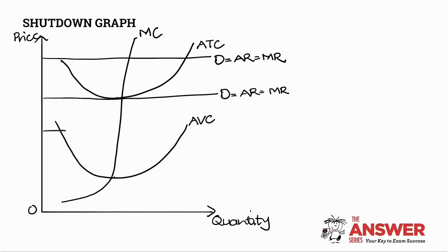We can say D is equal to AR which is equal to MR and that will of course be our economic loss situation because our average revenue is less than our average total costs.